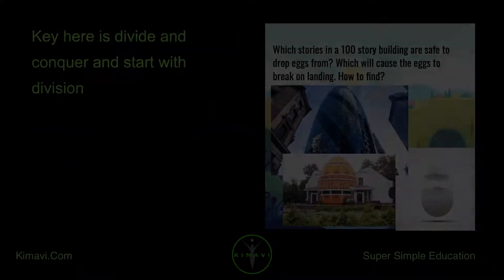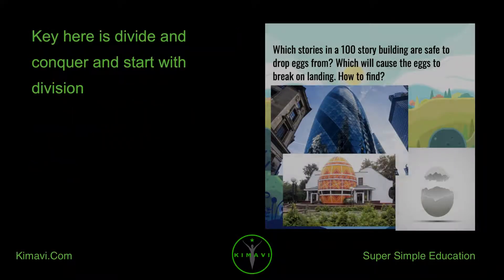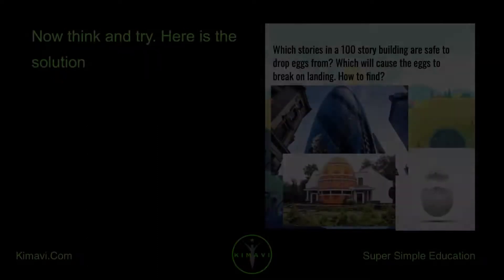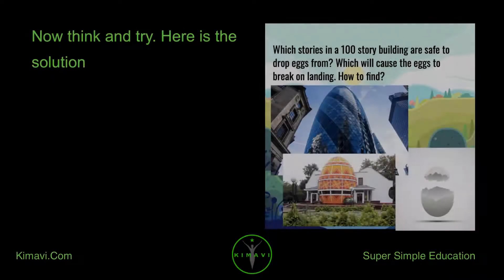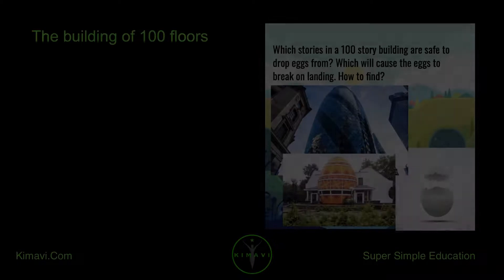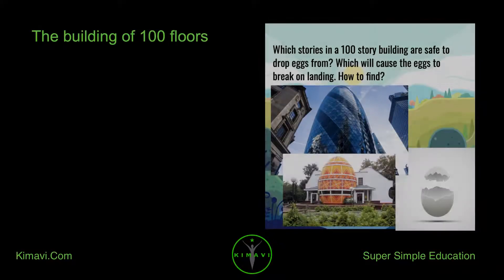The key here is divide and conquer — start with division. Now think and try. Here is the solution: a building of 100 floors.